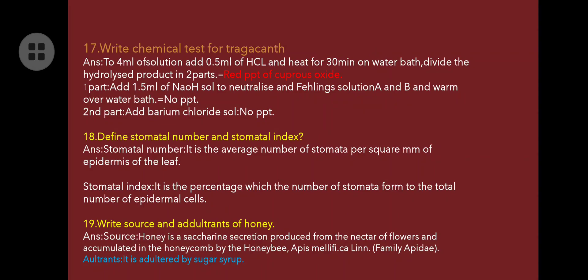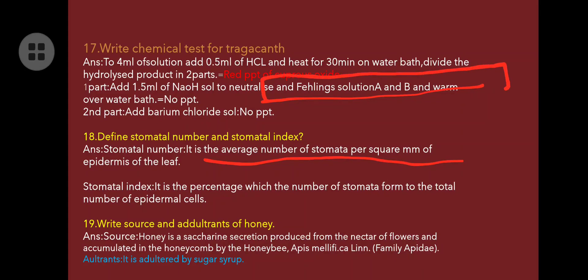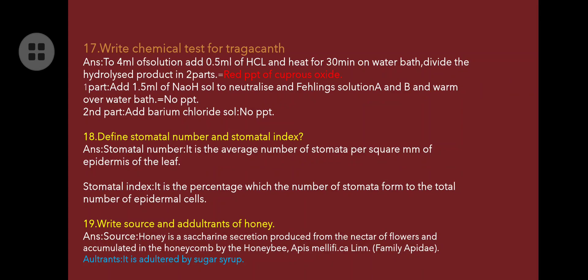Define stomatal number and stomatal index. Stomatal number is the average number of stomata per square mm of the epidermis of the leaf. Stomatal index is the percentage — the number of stomata formed relative to the total number of epidermal cells.